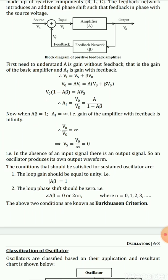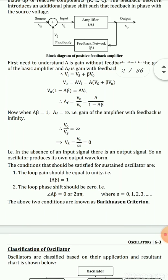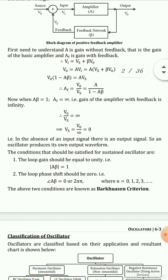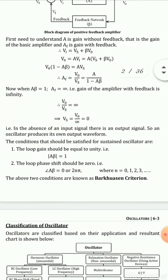For that case, we can consider that Vs equals 0. If we consider an oscillator, we don't have an AC source, which means Vs equals 0. From this condition, we can say that the first condition for sustained oscillation is that the loop gain should be unity. Loop gain means the gain from the input to the output of the amplifier, that is A, and from the output back to the input through the feedback network, giving a total gain of Aβ. So Aβ should equal 1, and the magnitude |Aβ| = 1.